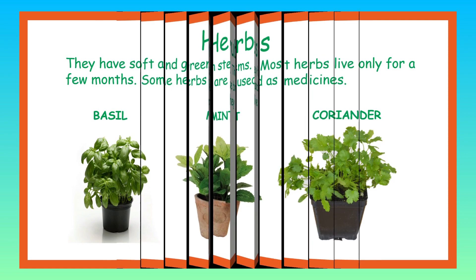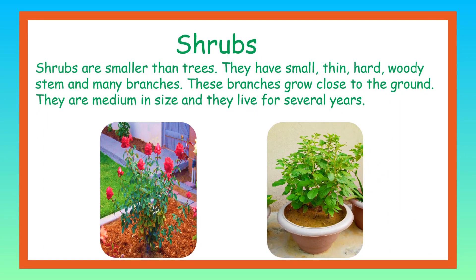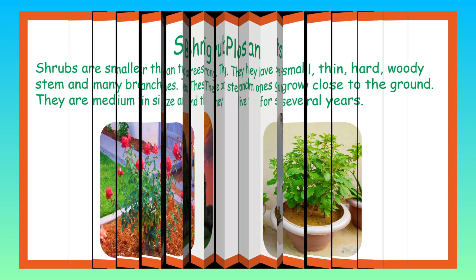Next, let us see about shrubs. Shrubs are smaller than trees. They have small, thin, hard, woody stem and many branches. These branches grow close to the ground. They are medium in size and they live for several years. Some examples of shrubs are rose and tulsi plants.